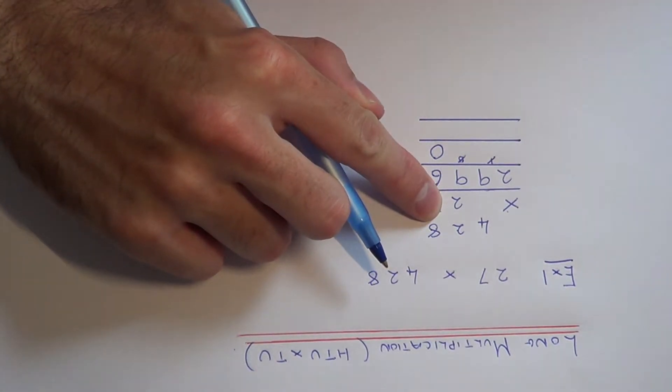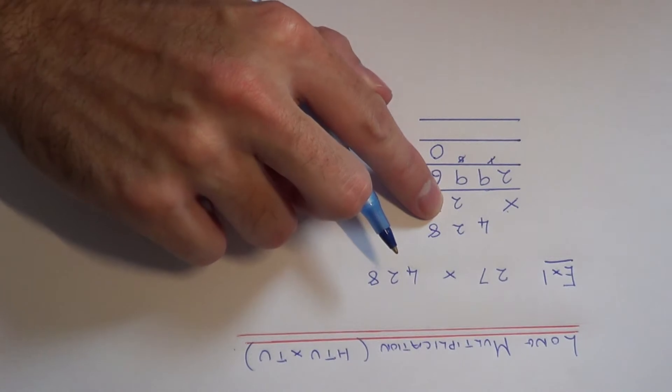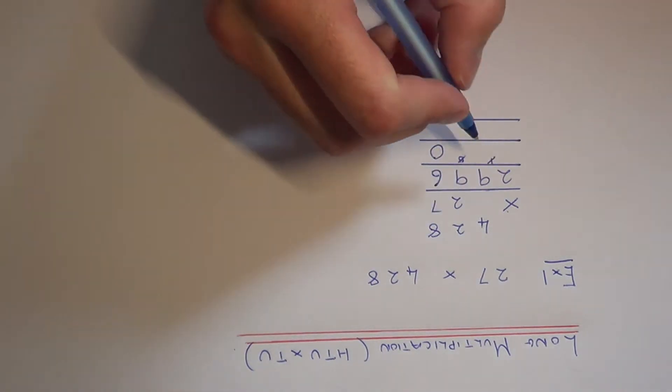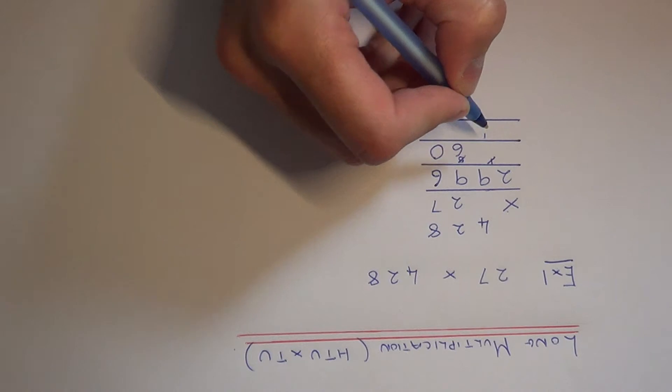So next let's work out 8 times 2. So 8 times 2 is 16. So we'll put the 6 at the top and carry the 1 underneath.